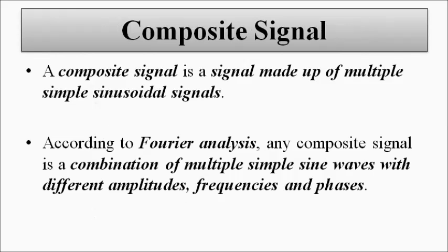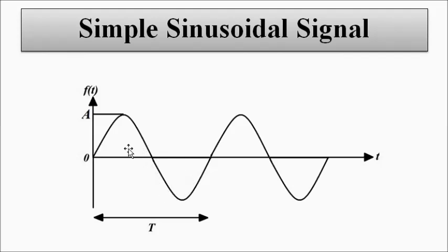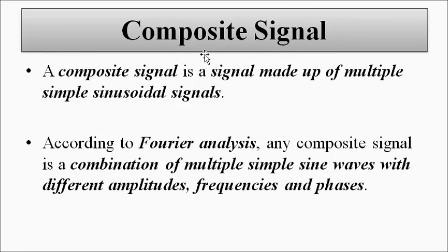Now, what is a composite signal? A composite signal basically is a combination of many simple sinusoidal signals. It is made up of multiple simple sinusoidal signals. The different sinusoidal signals can have different peak values, different frequencies, different time periods, and the phase can also be different. Many of those simple sinusoidal signals with different amplitudes and different frequencies combined together produce a composite signal.